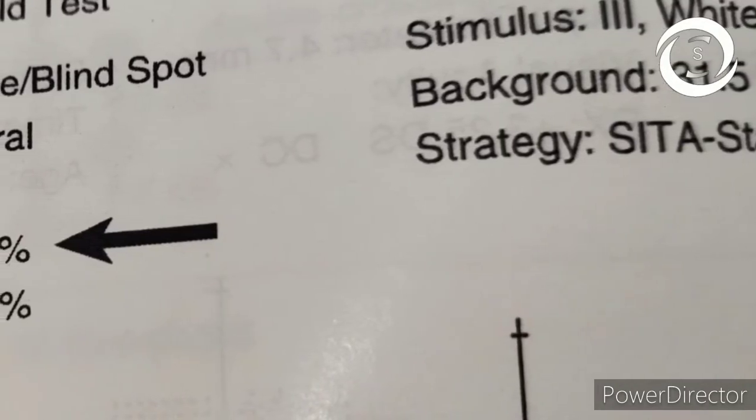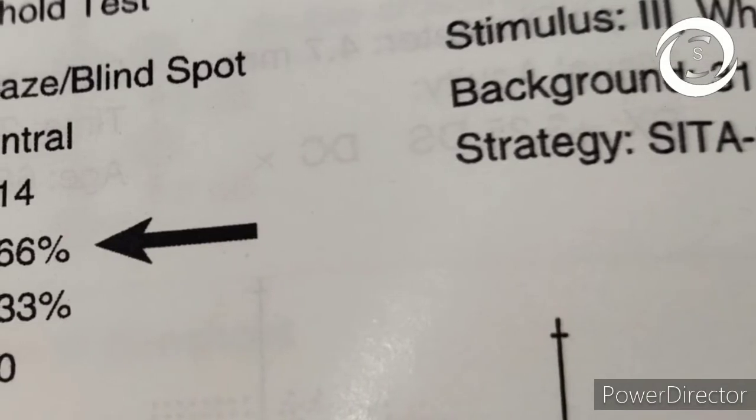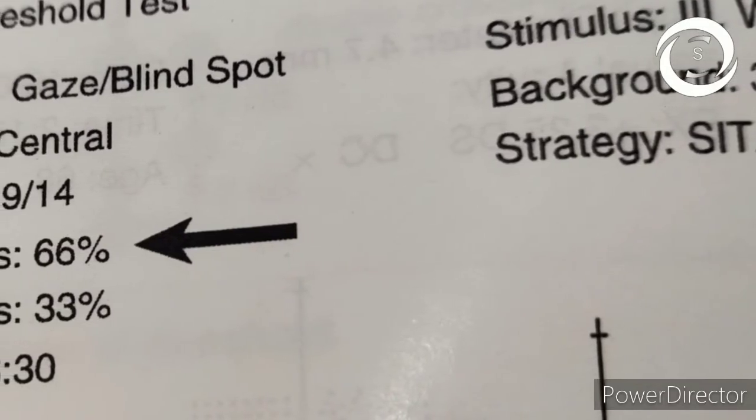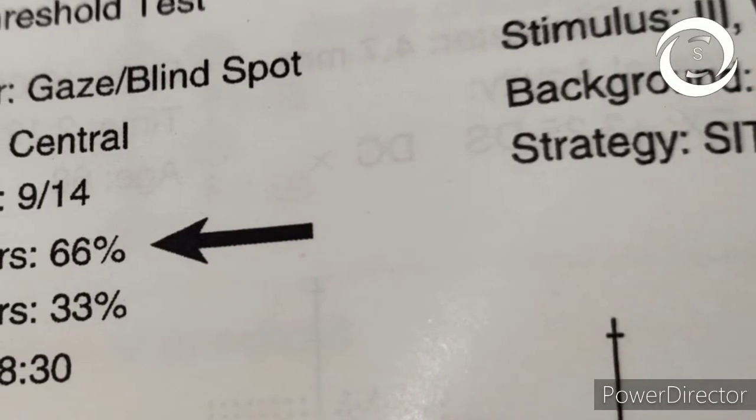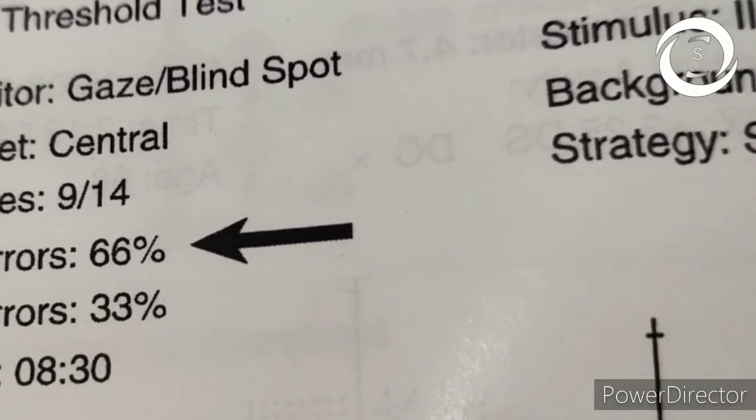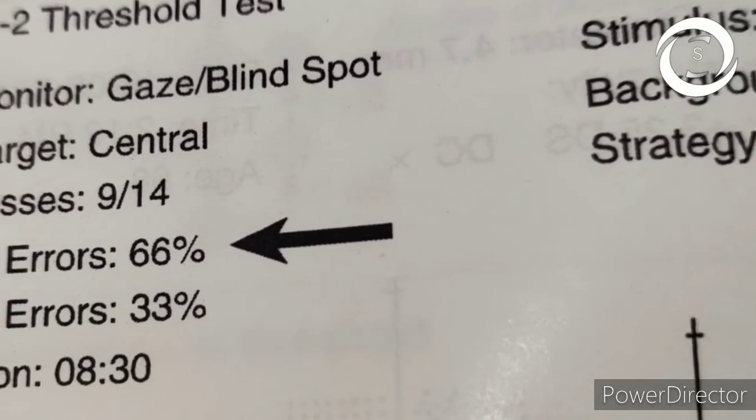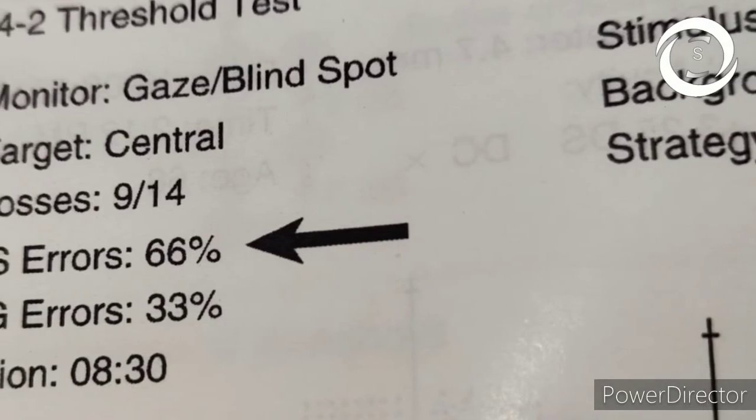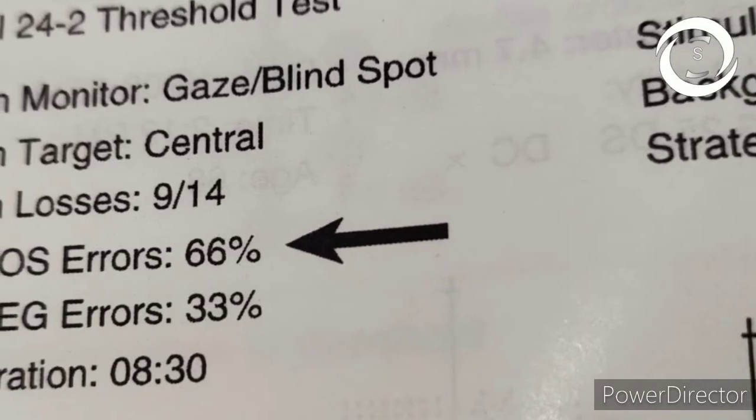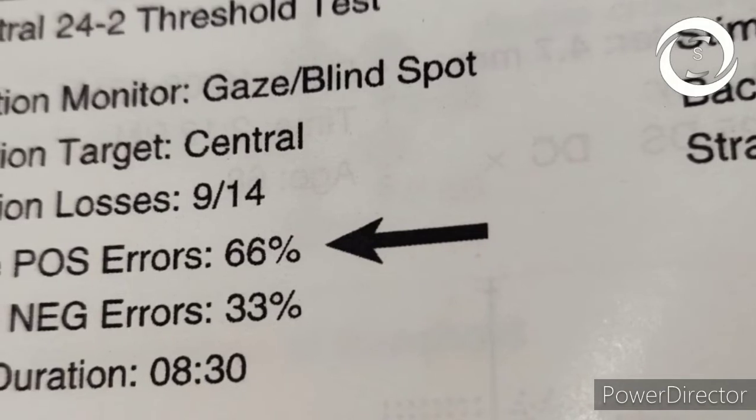Now comes to the reliability indices. Always check reliability indices at the start of reading printouts because there is no need to proceed if the visual fields are unreliable. So first, fixation losses means how many times patient moved his eyes. If patient loses fixation three times during test out of 10 times checked, it will be written 3/10, so 30 percent fixation losses. If 4 out of 10, 40 percent, then test is unreliable.